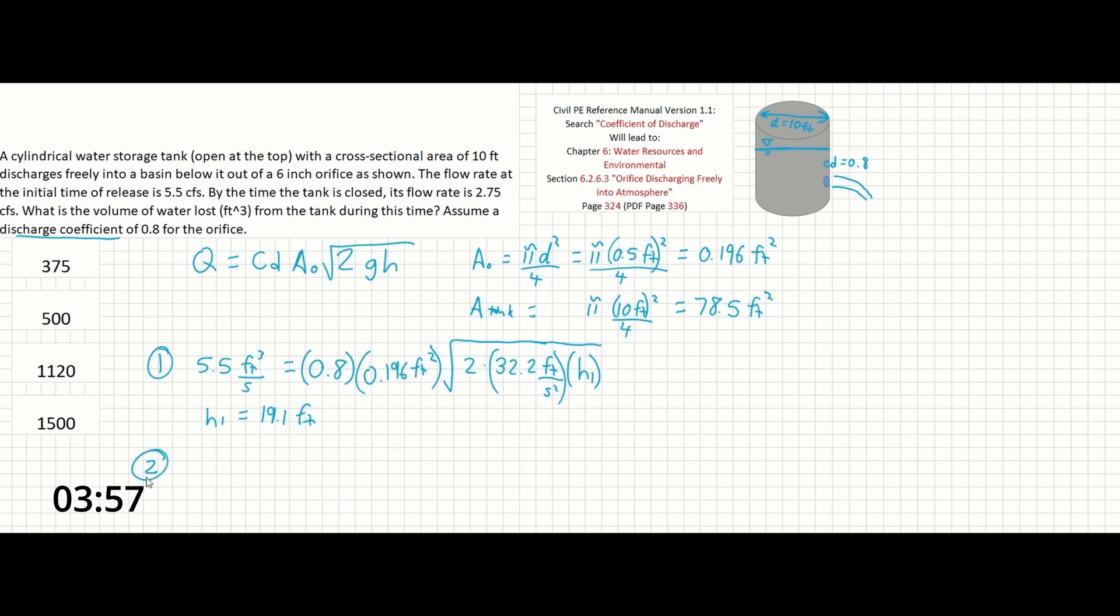Now if we solve for the height at the final flow rate, we can do this again and get the second height. So 2.75 cubic feet per second equals 0.8 times 0.196 feet squared times, again, same thing up top here, square root of 2 times 32.2 feet per second squared times H2.